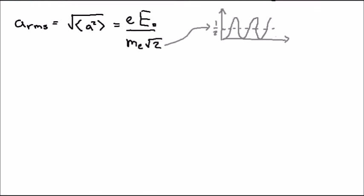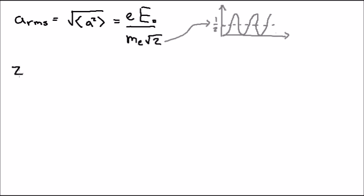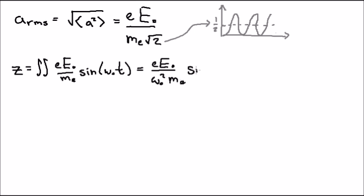So moving on, we can also solve the equation of motion for our electron. Just integrating this twice, this expression for z, we can get that the position of the electron is the charge times E₀ divided by ω₀² times the mass, times sine of ω₀t.